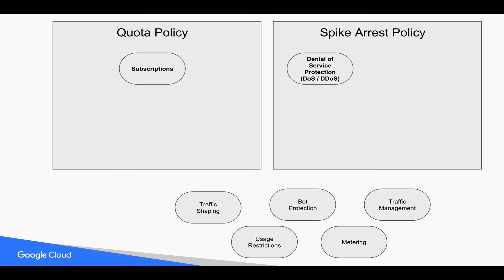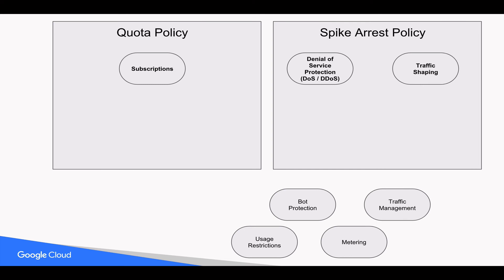Traffic shaping is a security and availability requirement to smooth the flow of traffic to backend systems — a candidate for Spike Arrest. Next, usage restrictions is a business requirement. An example could be free access to APIs restricted to X transactions per day — it's definitely a Quota policy use case.